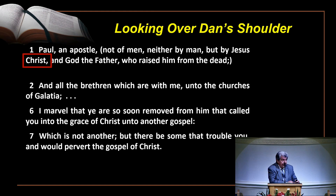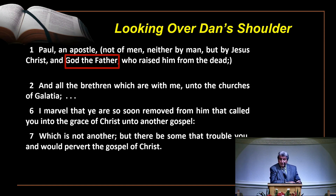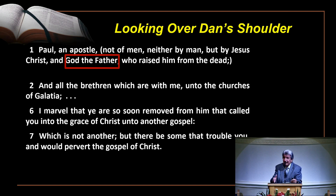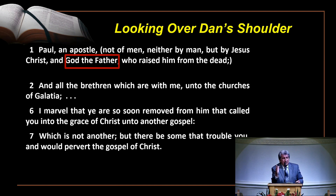He says, 'but by Jesus Christ, and...' — it's so easy to overlook the word 'and,' but 'and' is a coordinate conjunction that ties two things together. I am an apostle by Christ and by God. He talks about the attribute of God, that he is the Father. I am an apostle made so by Jesus and by God the Father. You're trying to figure out what this verse is all about — you will not read the book of Galatians and do all your studying in a day's time.